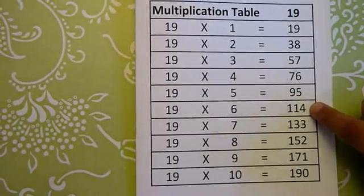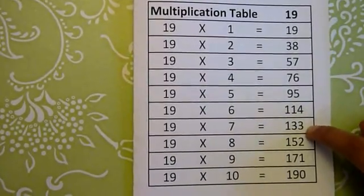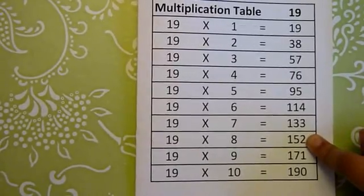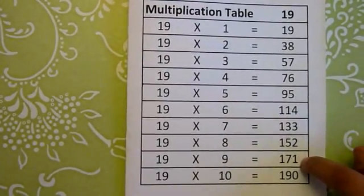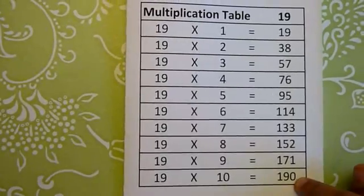19 sixes are 114, 19 sevens are 133, 19 eights are 152, 19 nines are 171, 19 tens are 190.